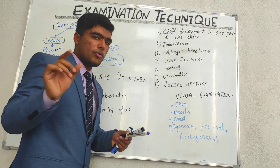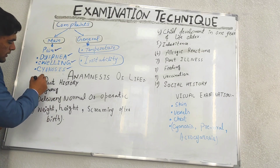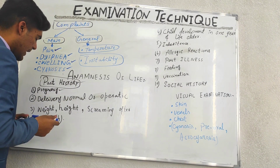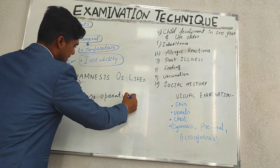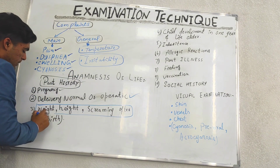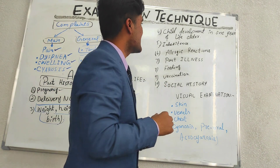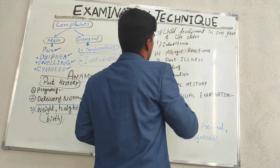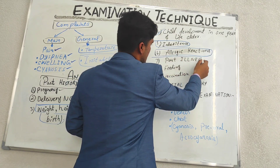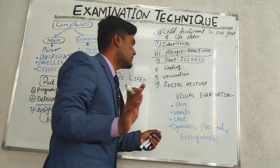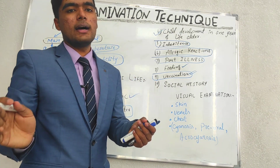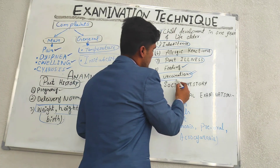Talking about the anamnesis of life — focus on this word anamnesis. Our first point is past history, in which we include pregnancy. We ask women about pregnancy in pediatrics and gynecology cases, and about delivery — whether it is operative or normal — and the weight, height, and screaming after birth of the baby. We also ask about child development from one year of life to elder age, inheritance and family history, allergic reactions, past illness, feeding stage, vaccination, and social history.